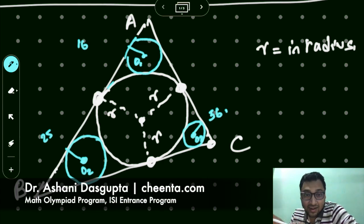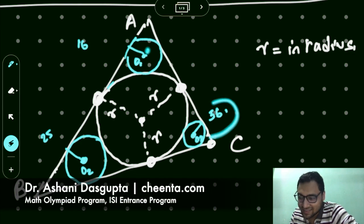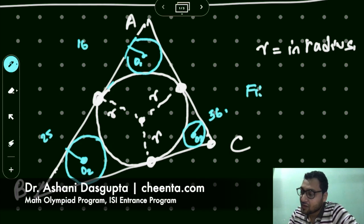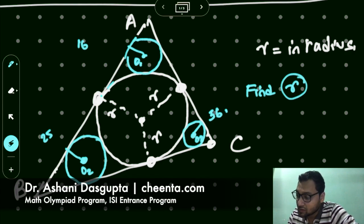You have to be careful the diagram is not drawn to scale. Of course, if this is 36, this cannot be 16. Visually that's not true, but it's just a sketch, a schematic sketch of what's going on. So given the fact that this is 16, this is 25 and this is 36, the question is find r, find this particular in radius.